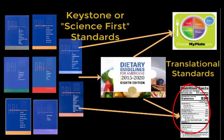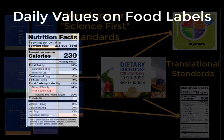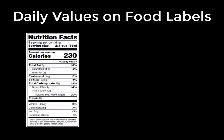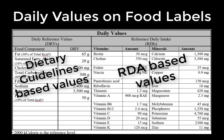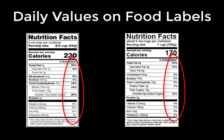The second translational standard is the daily values, used on food labels to make it possible to compare the nutritional value of foods at the point of purchase. Just like MyPlate, both the RDAs and the dietary guidelines have been translated into this standard. The vitamin and mineral standards come from the RDAs, and the macronutrients — carbohydrate, protein, and fat — come from the dietary guidelines, using 2,000 calories as the reference point and applying the recommended percent of calories to arrive at specific values. Once that's done, we can calculate percent daily values and compare one food to the next.